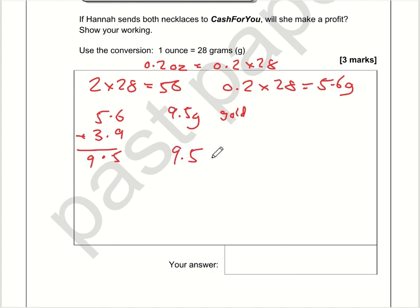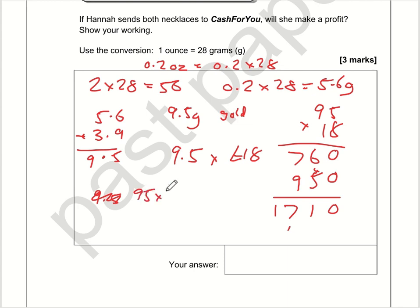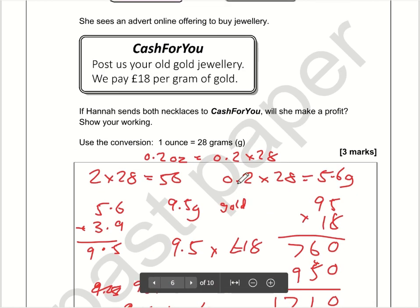We know gold is £18 per gram, so the next calculation is 9.5 multiplied by £18. I'll do 18 times 95 first: 8 times 5 is 40, carry the 4; 8 times 9 is 72 plus 4 is 76. Then 1 times 5 is 5 and 1 times 9 is 9, giving 1710. So 9.5 times 18 is 1710 with one decimal place shifted, which is £171.